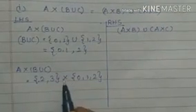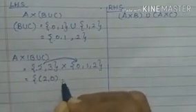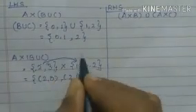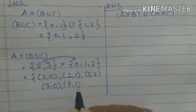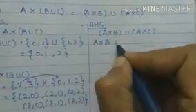Now we compute A×(B∪C) using ordered pairs — the Cartesian product. A = {2, 3} and B∪C = {0, 1, 2}. So the ordered pairs are: (2,0), (2,1), (2,2), (3,0), (3,1), (3,2). That is A×(B∪C) on the left-hand side.